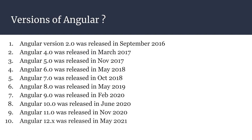Versions of Angular: Angular was initially started with Angular 1. Later on, it was completely rewritten with Angular 2, which was released in September 2016. After that, for every six months, the Angular team launches a major release. Angular 4 was released in March 2017, and Angular 5 was released in November 2017.